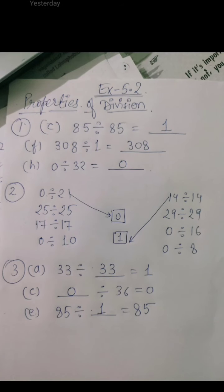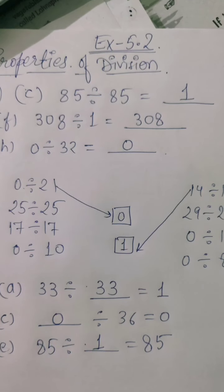So, match the following. I think, all of you can do by yourself. Because, you know the properties. That when we divide a number by that same number, we always get 1. Similarly, the same thing. 17 divided by 17. Then also we get 1.